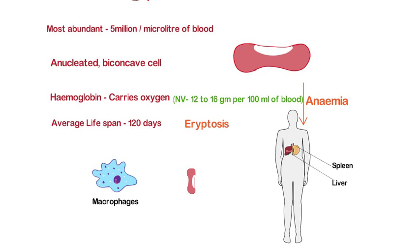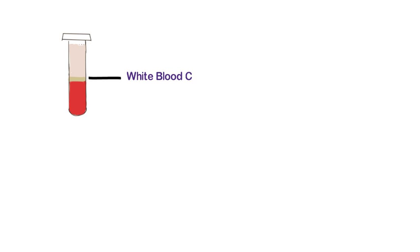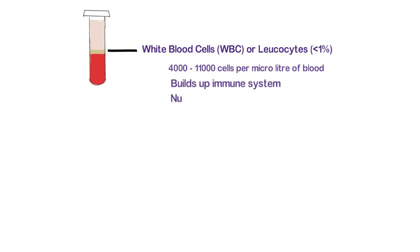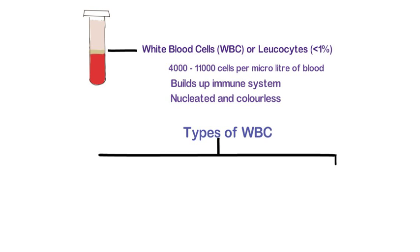The buffer layer occupies less than 1% of total blood volume and contains white blood cells, or leukocytes — approximately 4,000 to 11,000 cells per microlitre, much fewer than RBCs. These cells are mainly involved in developing immunity and are mostly colorless, so the nucleus takes up the color of the stain used. WBCs are broadly divided into granulocytes, which have granular cytoplasm with a lobed nucleus, and agranulocytes, which lack granular cytoplasm.